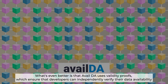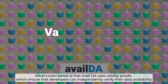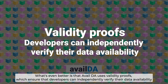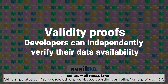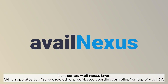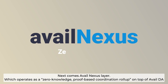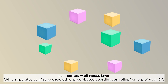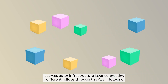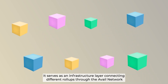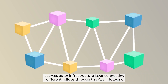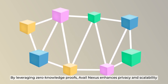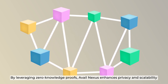What's even better is that Avail DA uses validity proofs, which ensures that developers can independently verify their data availability. Next comes the Avail Nexus layer, which operates as a zero-knowledge proof-based coordination roll-up on top of Avail DA. It serves as an infrastructure layer connecting different roll-ups through the Avail network. By leveraging zero-knowledge proofs, Avail Nexus enhances privacy and scalability.